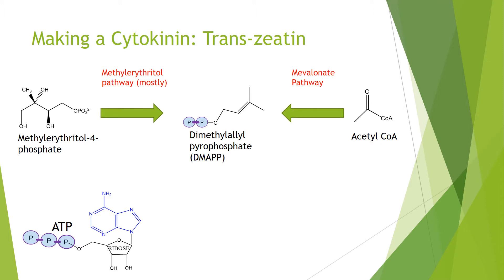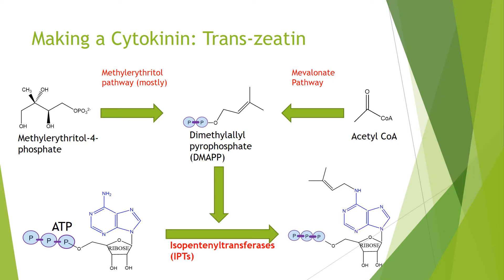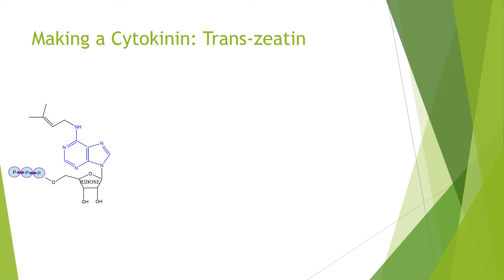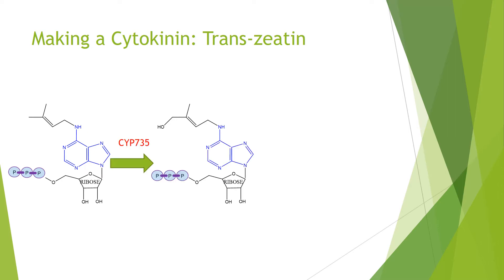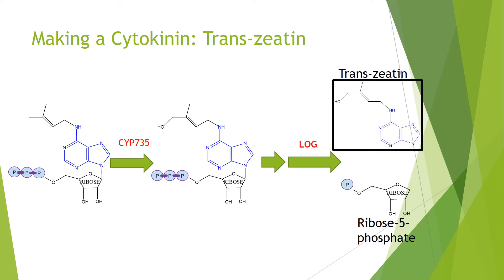We need to ligate this activated isoprene unit onto nitrogen 6 of adenine, as shown here, which is catalyzed by isopentanyl transferases, or IPTs. However, the product of the reaction isn't exactly what we want. We first need to hydroxylate the isoprene unit with a cytochrome P450 enzyme, then cleave off the phosphate groups and cleave the bond between the nitrogen of adenine and the ribose sugar using a LOG enzyme, or lonely guy enzyme. This finally creates trans-zeatin and also ribose 5-phosphate.